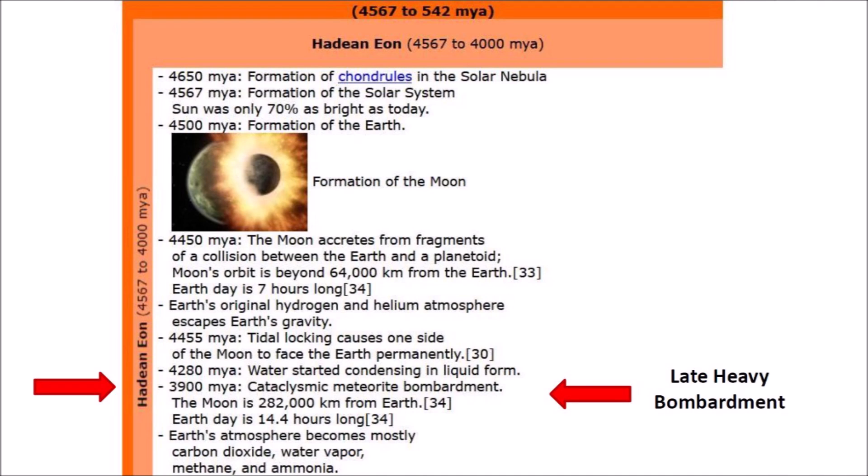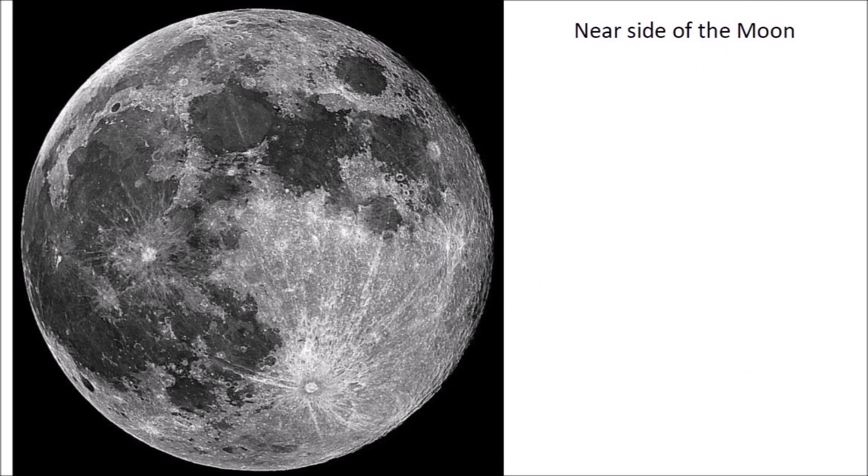From about 4,100 to 3,800 million years ago, a large number of asteroids or comets collided with the early terrestrial planets and the Moon. The source of these impactors is not known, but they probably originated from debris of other collisions in the solar system. The scars of these impacts have been removed from the surface of the Earth by wind and water erosion and by plate tectonics, but they have been preserved on the Moon. The near side of the Moon is covered with large impact basins from which we can estimate the power of the collisions of the late heavy bombardment, and the surface of the Earth must also have been impacted in a similar way.